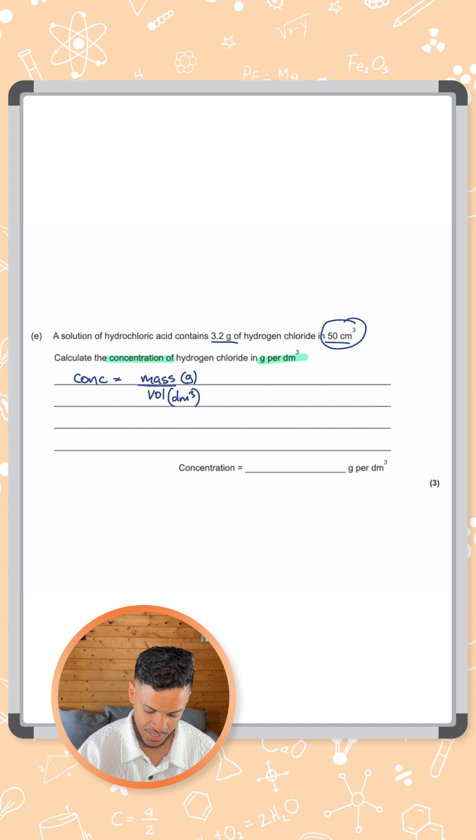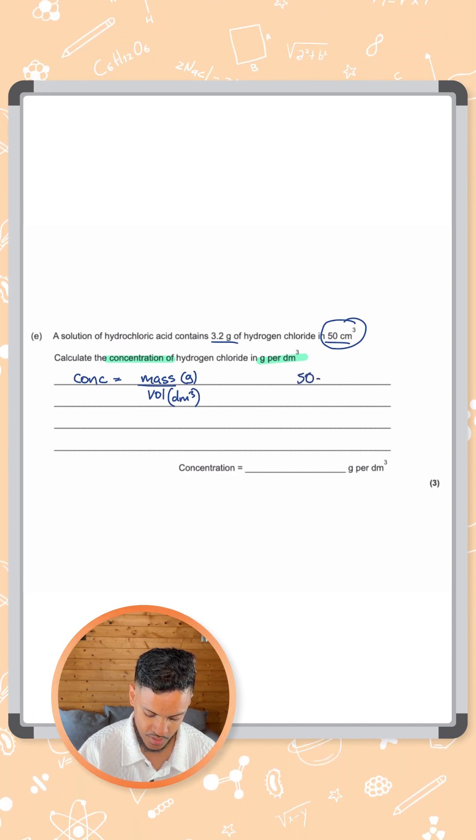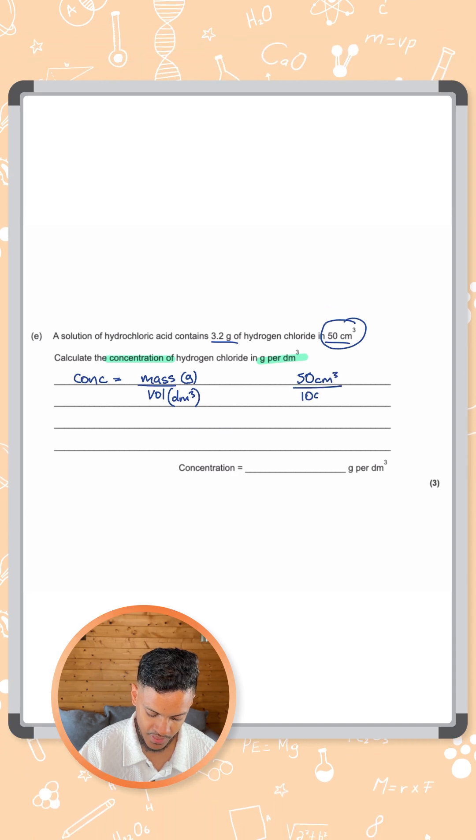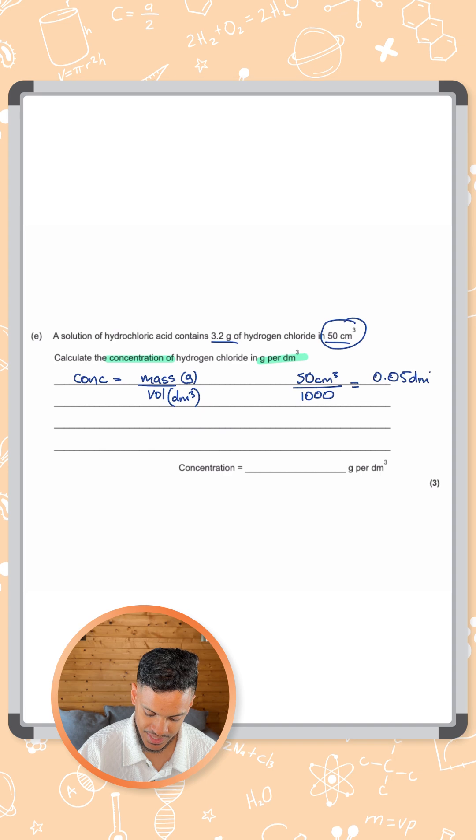So first thing we need to do is convert the 50 centimeters cubed into dm cubed. And to do that, you want to divide it by 1000. So that gives you 0.05 dm cubed.